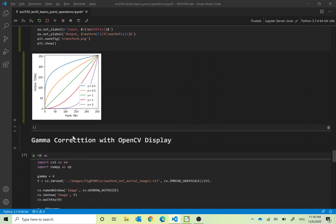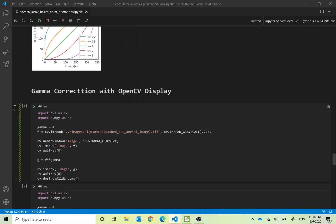Same plot. Now let us do the gamma correction and display it using OpenCV. First using this simple operation.